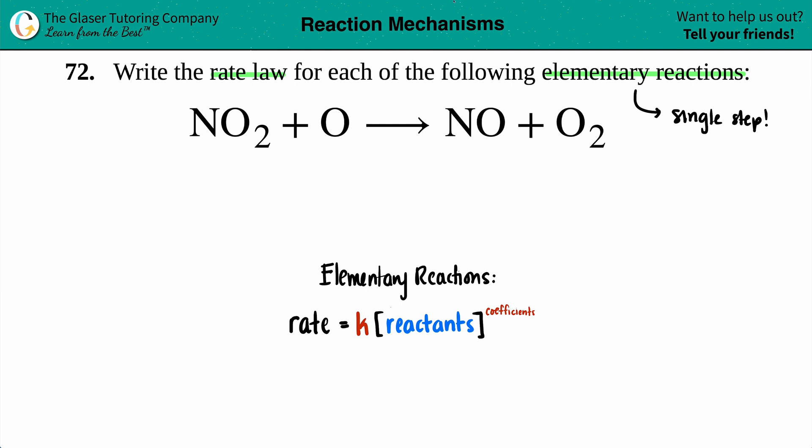But in this case, if you know that it's an elementary step, meaning that it's one single step, you will raise your concentrations to the coefficients. If it's an overall reaction and we can't say that it's happening in one single step, remember, these are raised to the orders and we can't say that they're coefficients. But if this is all you have and your rate is going based off of the mole ratios between your reactants, you can use those coefficients.